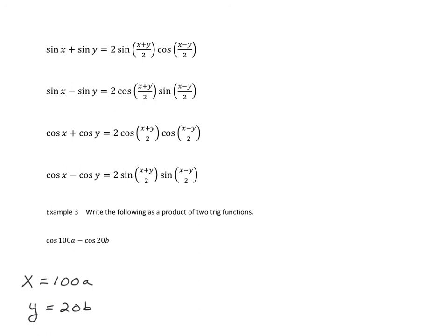The rest is just plugging in everything correctly. According to this identity, it's 2 times sine of—first we'll add these two amounts and divide by 2, so that's 100a plus 20b divided by 2—and we're going to multiply that by sine of—here we have the difference of the two—so that is going to be 100a minus 20b all over 2.